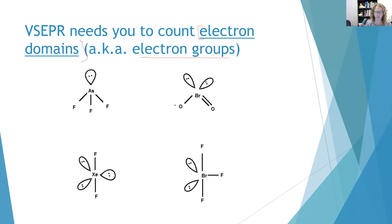It's much easier to see by example. So when I look at this AsF3 molecule, I see a lone pair and I see three bonds. So I say that this has four electron domains. When I look at this bromate, I see a lone pair, a lone pair, a double bond, and a single bond. This also has four electron domains.